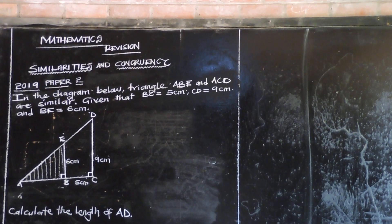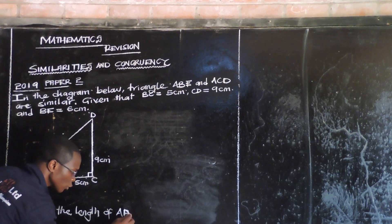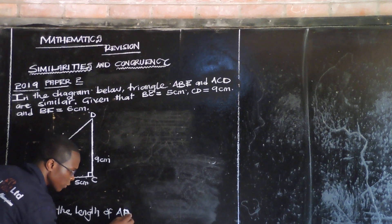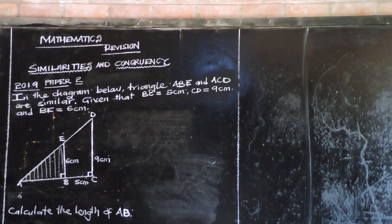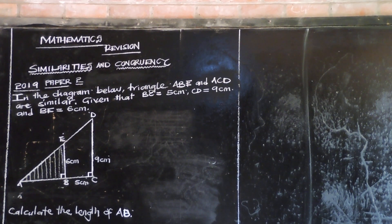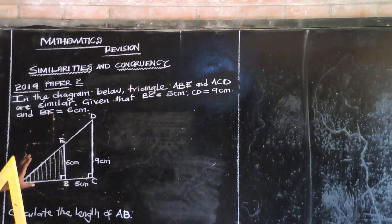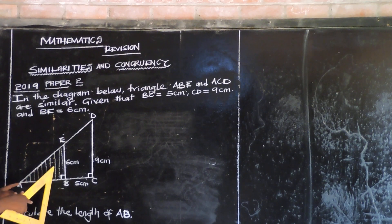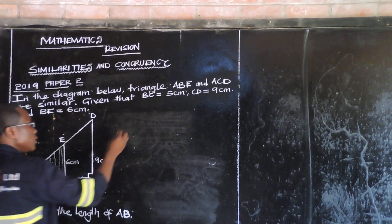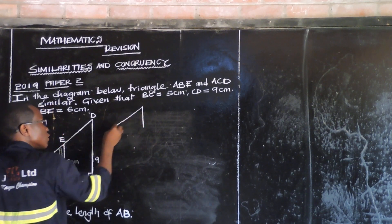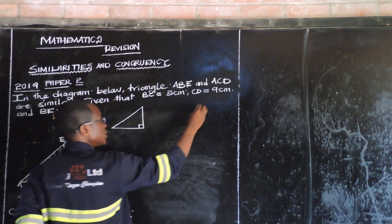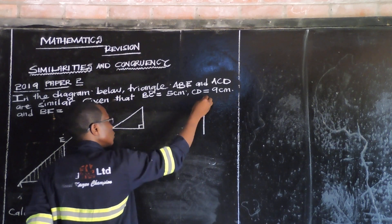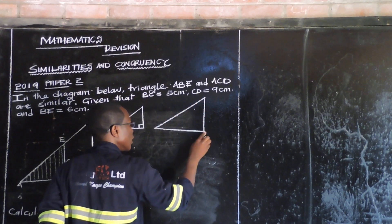Let me clarify — it's supposed to be AB, not AD. From A to B, that is what we want. I think the best thing you can do to answer this question is to try to separate the two triangles. Separate the small one from the big one.